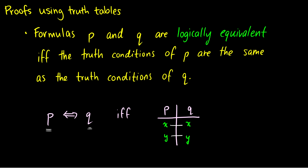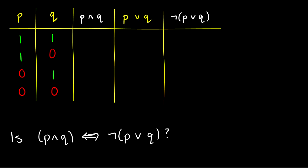Let's jump straight into an example. I want to know if P∧Q is logically equivalent to ¬(P∨Q). First, we build our truth table for P and Q for all of our propositions. Then we piece together one connective at a time everything we need to get both statements. For P∧Q, we put P and Q together. But for ¬(P∨Q), first we put P∨Q together, shown in the fourth column, and then we add the negation in the fifth column.